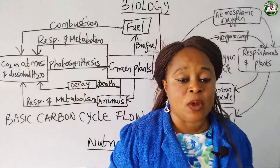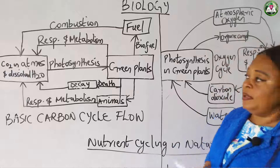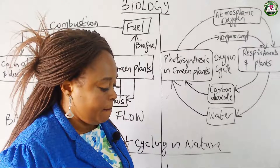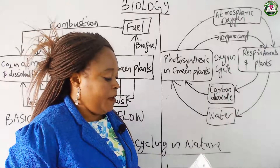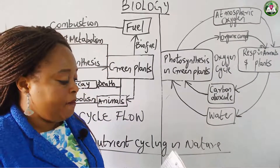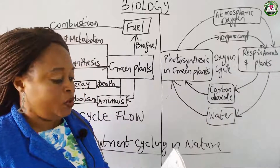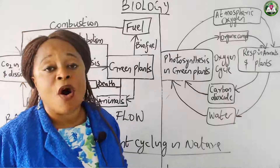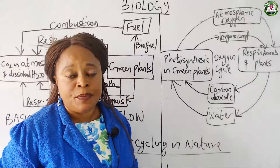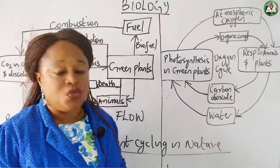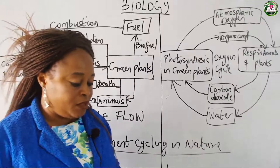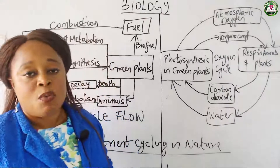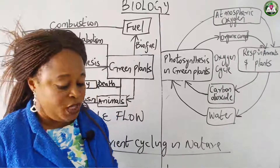Let us start with explaining what the carbon cycle is. The carbon cycle involves the series of processes by which carbon in the form of carbon dioxide is removed and restored to the atmosphere. What are the ways in which carbon is removed from the atmosphere?